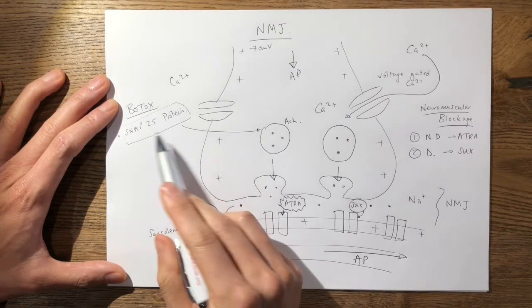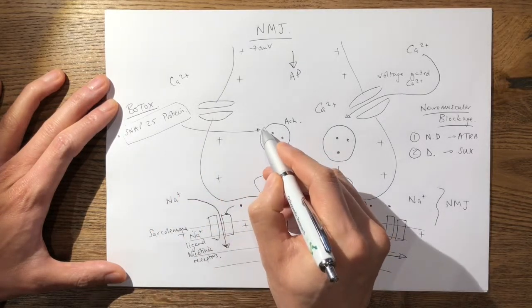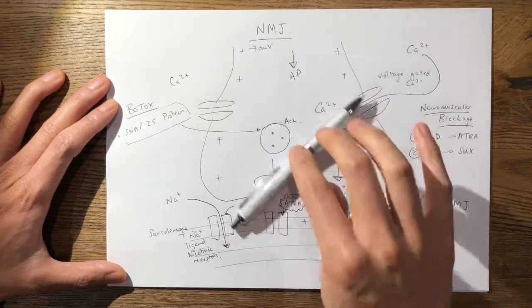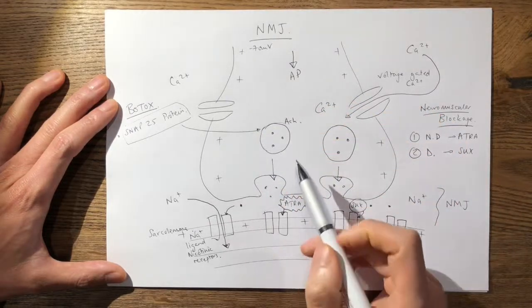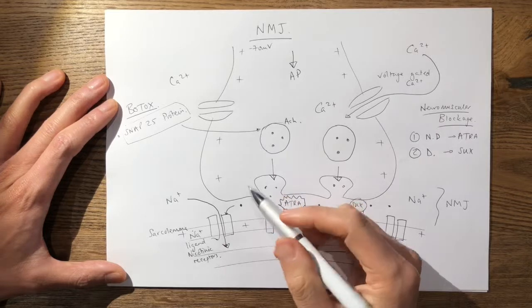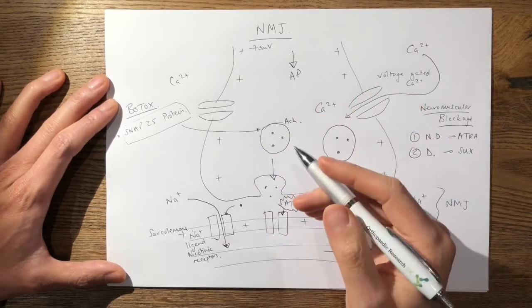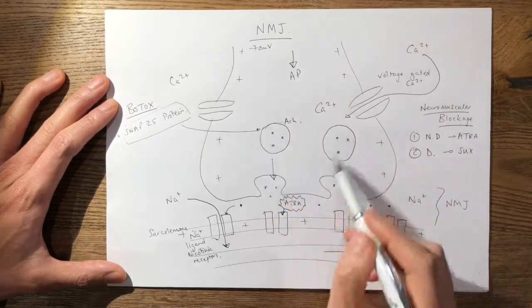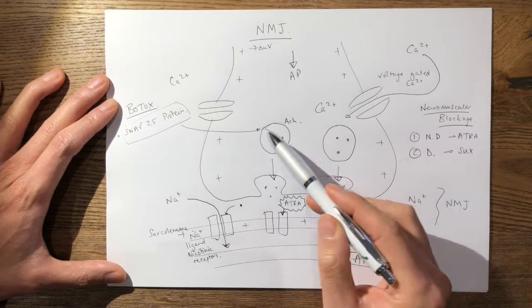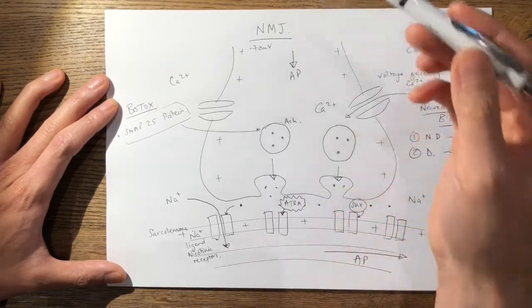Although this particular process is permanent, so once it actually affects this particular vesicle, this vesicle will never work again. However, the effects on the patient are temporary because they only last about three or four months because once these vesicles are knocked out you still have more acetylcholine and more vesicles in production from the motor cell which is much more proximal.